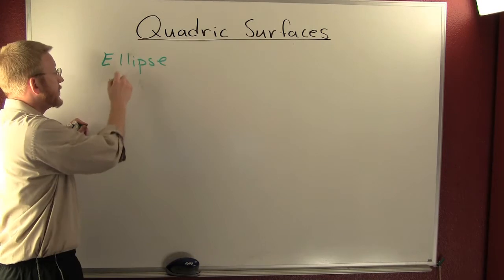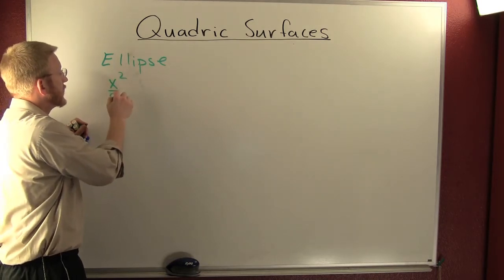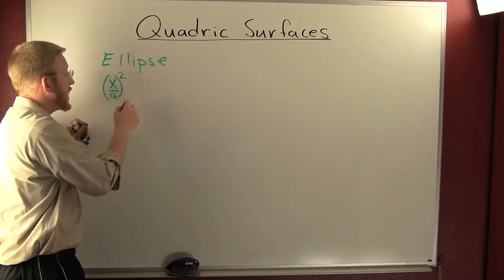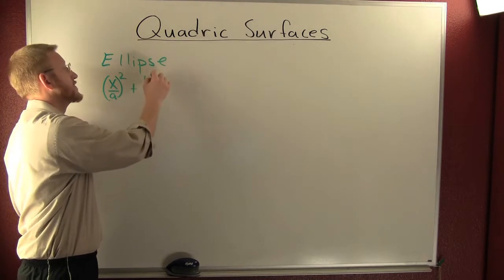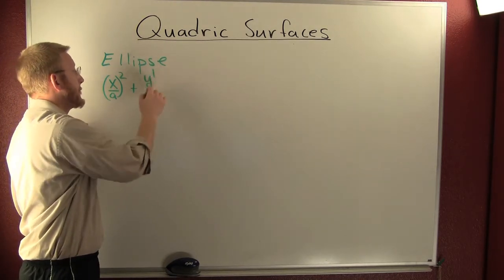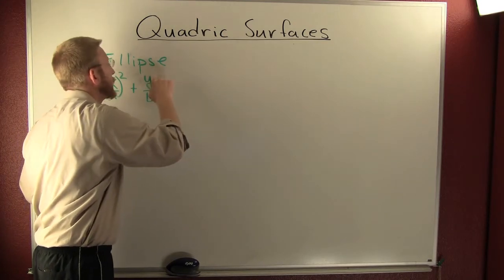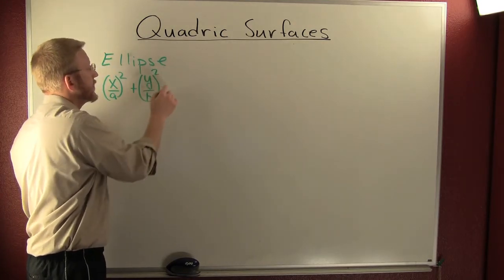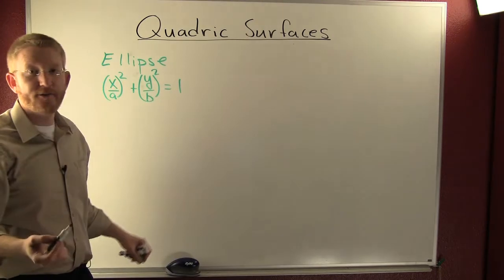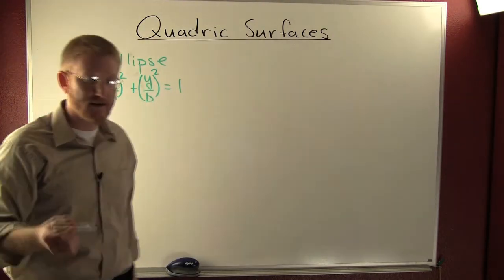That was of the form x squared, x over a squared plus y over b squared is equal to 1. If you were to graph that thing in two dimensions, we did see that.